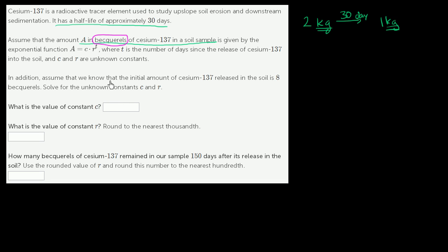Becquerels is the international unit of radioactivity, named after Henry Becquerel, who co-discovered radioactivity with Marie Curie. So you could consider this the amount of cesium-137 that causes A becquerels of radioactivity.